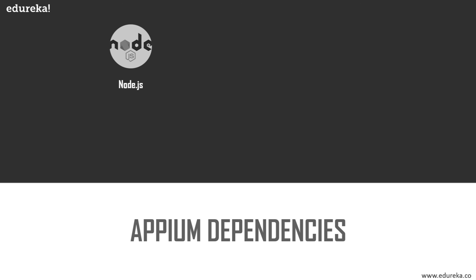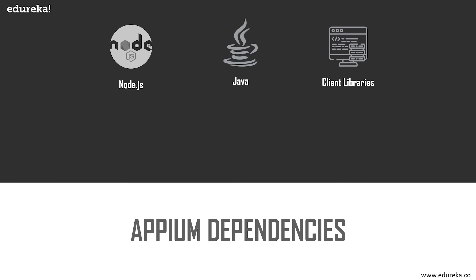You can install Appium through Node.js if you just want the command line interface version, but for the desktop version you will also need Java. Java needs to be installed with the latest version — JDK and JRE need to be installed on your computer and the path also needs to be set. Above that, you need the client libraries, which can be easily found from the Appium website. These client libraries mean that if you are coding in Java, Python, or C, you will need their respective client library so that Appium understands those requests.